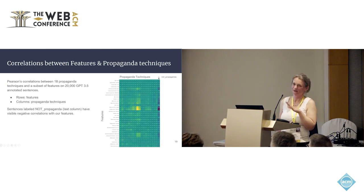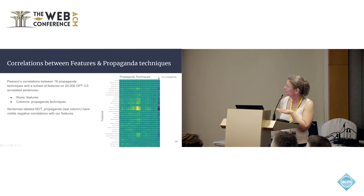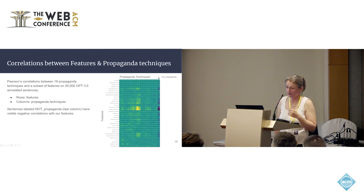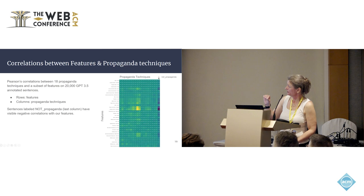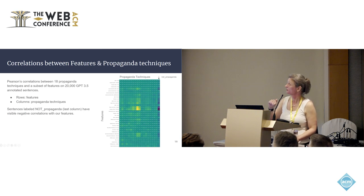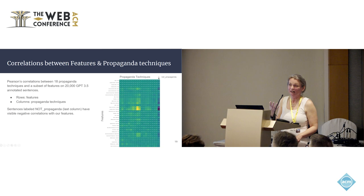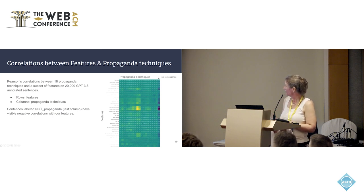Finally — and this is not in the paper, it's a bonus because it was done after the paper was completed — this is a heat map of correlations between the propaganda techniques from the PTC corpus and a subset of our extracted features. While the correlations are small, there's a negative correlation between our features and sentences labeled as not propaganda. That's a really promising result, even with noisy data at around 50% accuracy — we're still getting really visible correlations.